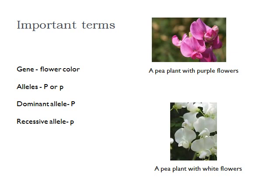By convention, in pea plants, the allele that codes for purple flowers is represented by the big P, and the allele that codes for white flowers is represented by a little p. Big P is considered the dominant allele because only one copy of it is needed for the plant to express the purple phenotype. Little p is considered the recessive allele because two copies of that allele are needed for the pea plant to produce white flowers.